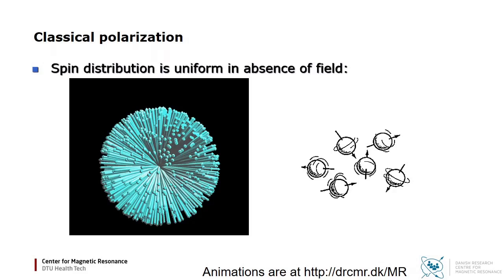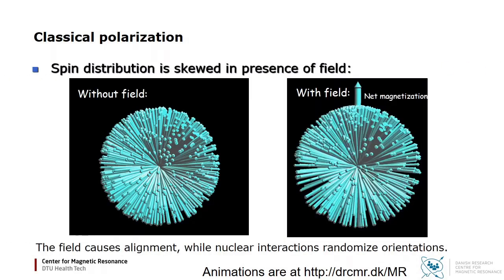In absence of field, the spin distribution is uniform over directions as illustrated in these two figures. When the sample is placed in a static B0 field, the distribution becomes skewed in the direction of the applied field. The spins tend to align with the field, but the nuclear interactions are very energetic compared to the spin energy, so the degree of alignment is very small, typically in the ppm range.